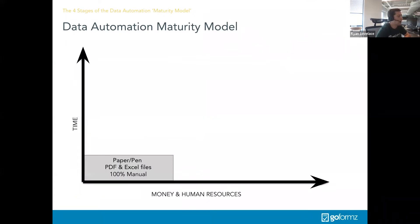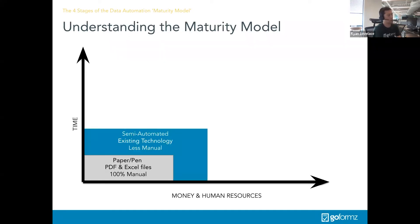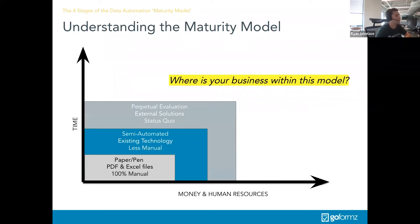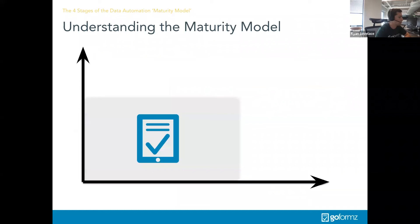When folks realize they have a problem with pen and paper processes, they first convert to PDF and Excel, but the process remains entirely manual. They throw money and human resources at the problem, but cheaper or familiar technologies aren't powerful or flexible enough. They then try more sophisticated solutions that involve complicated processes or coding experience. So they return to the status quo, remaining in a perpetual state of evaluation — until they find GoForms, where we offer a different approach.